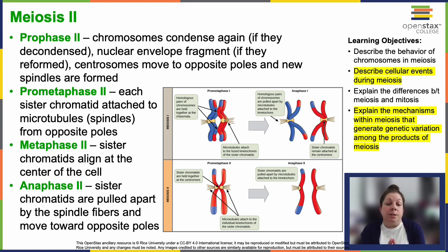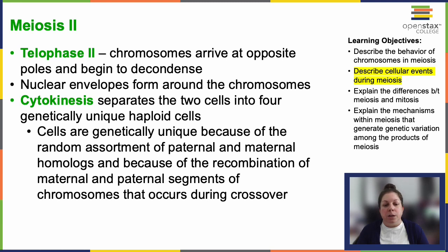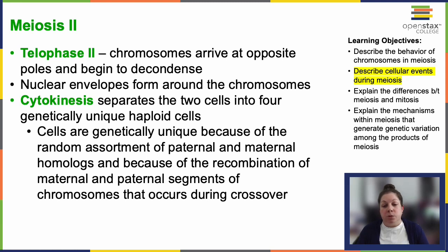Then anaphase II separates the sister chromatids, moving them to opposite poles. In telophase II, chromosomes arrive at the opposite poles, start to decondense, and the nuclear envelope reforms around them. Cytokinesis divides the two cells into four genetically unique haploid cells. These newly produced cells are haploid, containing one set of chromosomes, and are genetically unique due to random assortment of paternal and maternal homologues and recombination of maternal and paternal chromosome segments during crossing over.